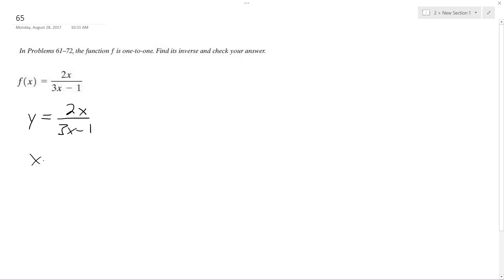So I'm going to swap x and y now. So x is equal to 2y over 3y minus 1. So first multiply by 3y minus 1. Then I'm going to distribute the x, 3xy minus x equals 2y.